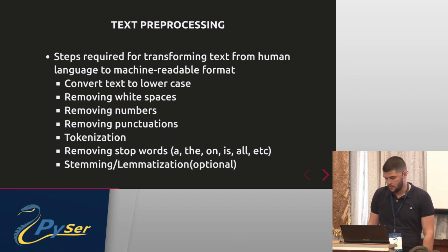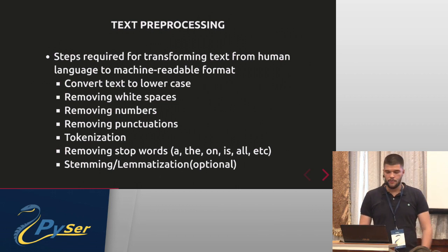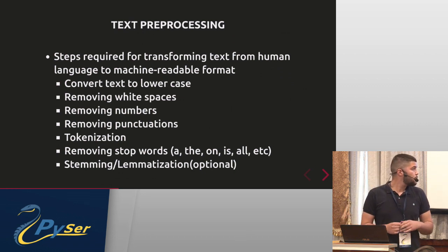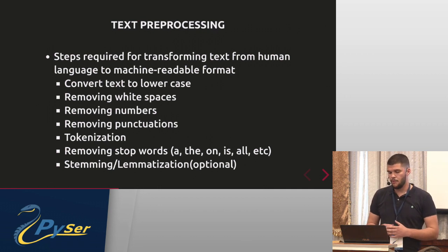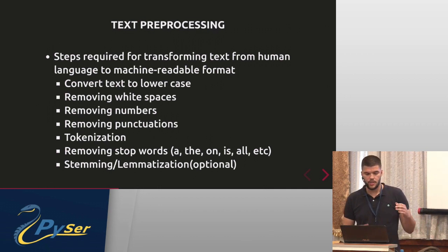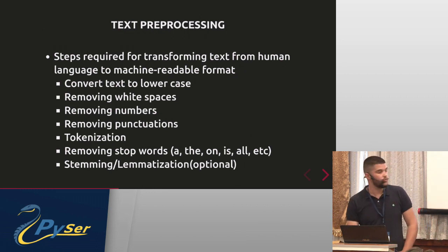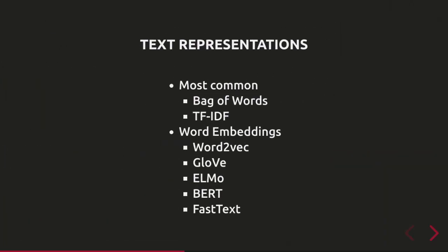Stemming and lemmatization are techniques used to transform words to their root or base format. For example, if we have the words 'cook', 'cooking', and 'cooked' across three documents, those would be treated differently. But if we apply stemming or lemmatization, all three words get reduced to 'cook', giving us the same word across all three documents.